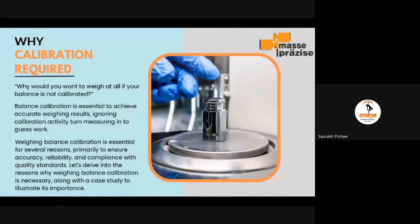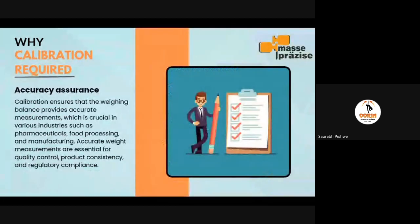Let's delve into the reasons why weighing balance calibration is necessary, along with a case study to illustrate its importance. The first point we would like to highlight is accuracy — assurance of accuracy. Accuracy means closeness to the true value, and the true value is the certified value of the masses used to calibrate the weighing balances. Calibration ensures that a weighing balance provides accurate measurements, which is crucial in industries such as pharmaceutical, food processing, and manufacturing. Accurate weight measurements are essential for quality control, product consistency, and regulatory compliance.